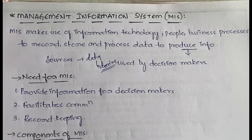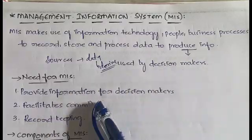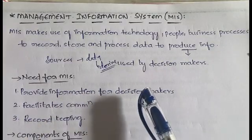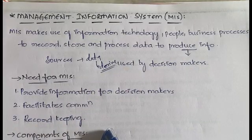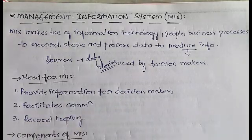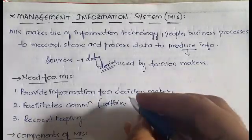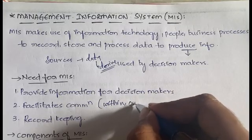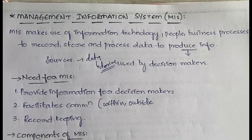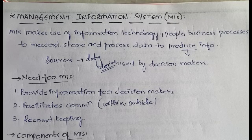Now, what is the need for Management Information System? The first need is to provide information for decision makers — MIS is very useful in providing correct information so that appropriate decisions can be taken. The second need is facilitating communication, both within the organization among employees and outside the organization with customers, stakeholders, or competitors.